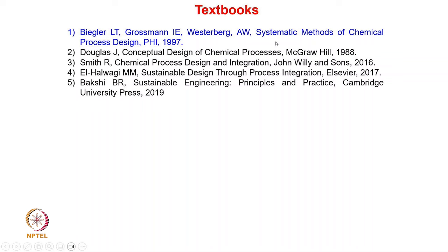In this course we are going to use several textbooks. The first textbook we will use regularly is Systematic Methods of Chemical Process Design by Grossman, Bigler and Westerberg. In addition, we will use reference books like Conceptual Design of Chemical Processes by Douglas, Chemical Process Design and Integration by Robin Smith, Sustainable Design through Process Integration by Mehmood Halwagi, and Sustainable Engineering by Bhavik Bakshi.